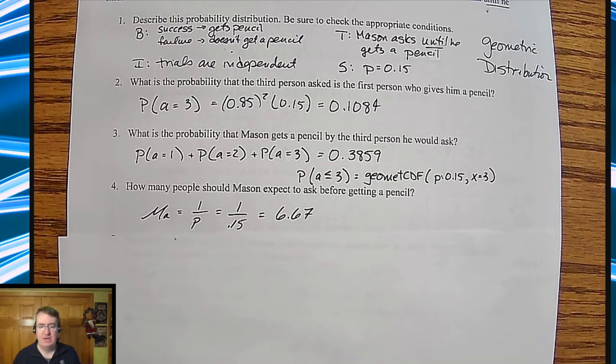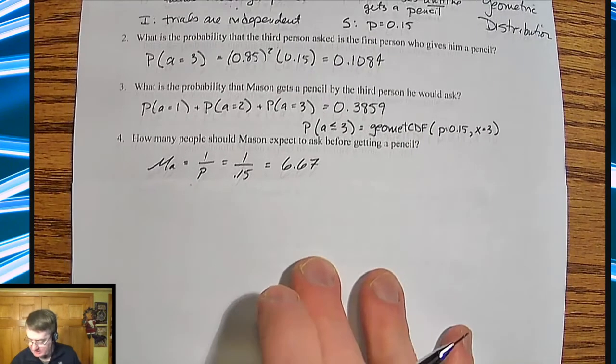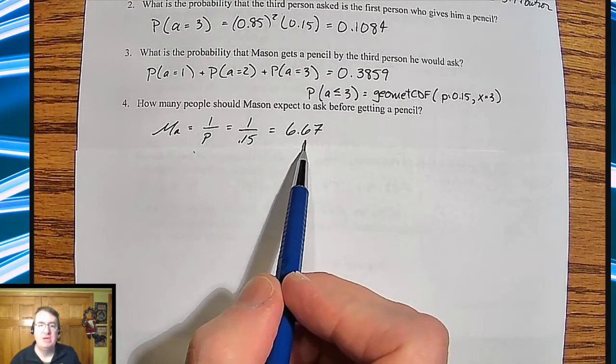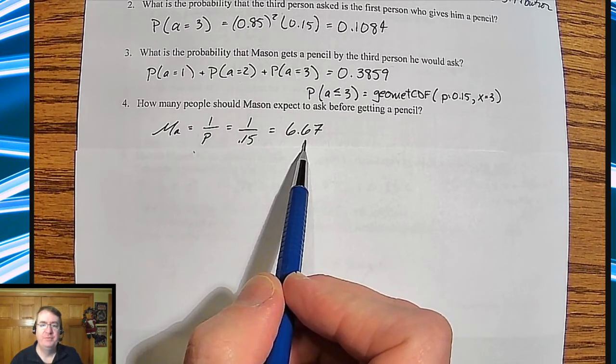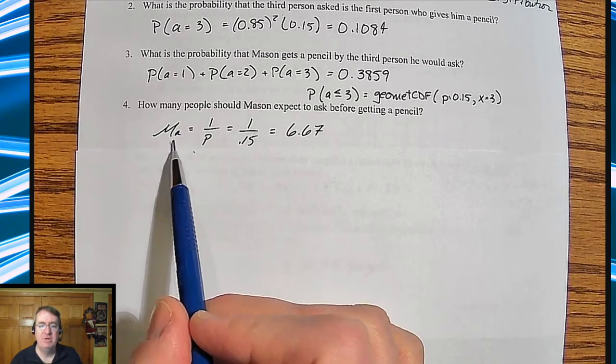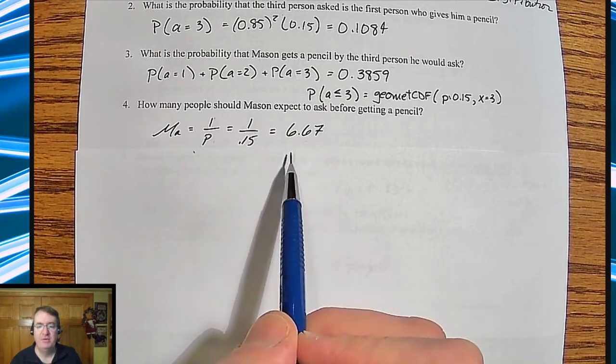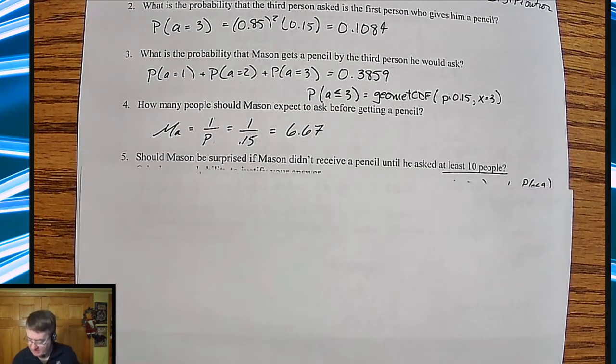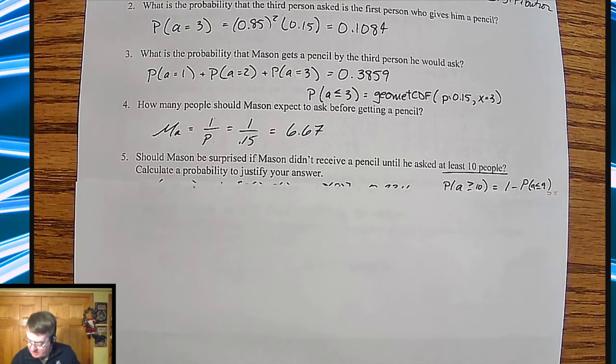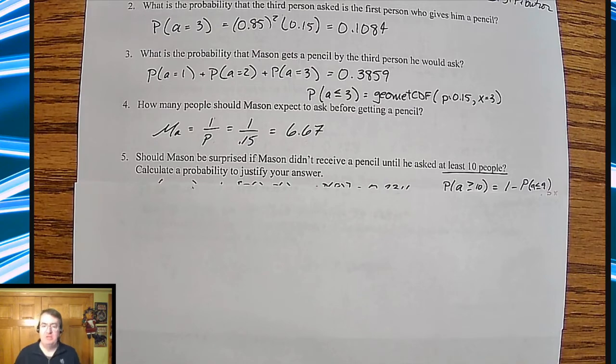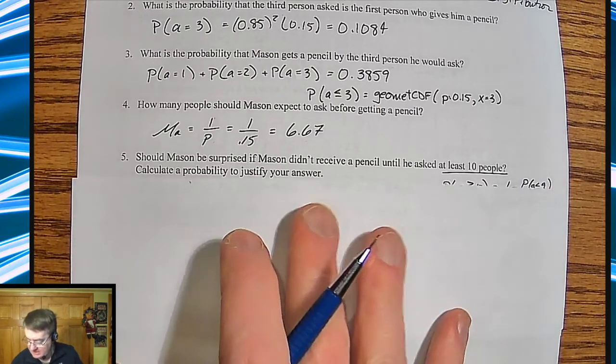So the mean here is that he's going to, on average, have to ask just under seven people in order to get a pencil. We get that because the mean is going to be one divided by your probability of success. One divided by 0.15 gives you 6.67.